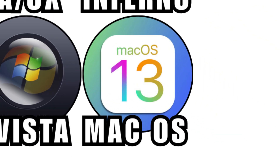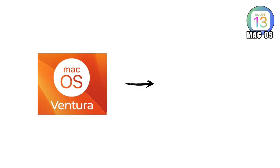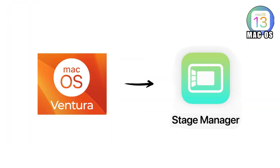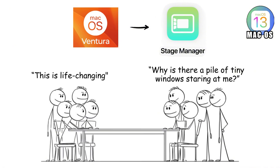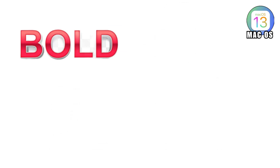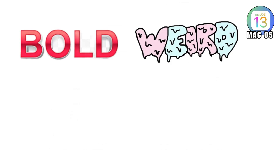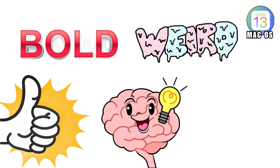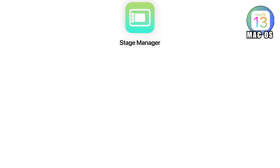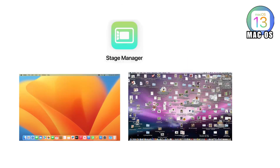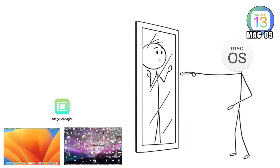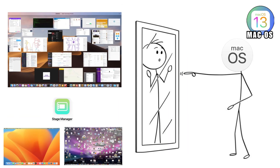macOS 13 Ventura introduced Stage Manager, which instantly divided humanity into two groups: people who said 'this is life-changing,' and people who said 'why is there a pile of tiny windows staring at me?' It was bold, weird, and surprisingly useful once you forced your brain to accept it. Stage Manager let you organise windows into neat clusters, reducing desktop chaos, but it also made some users feel like their Mac was suddenly judging them for having too many open tabs.